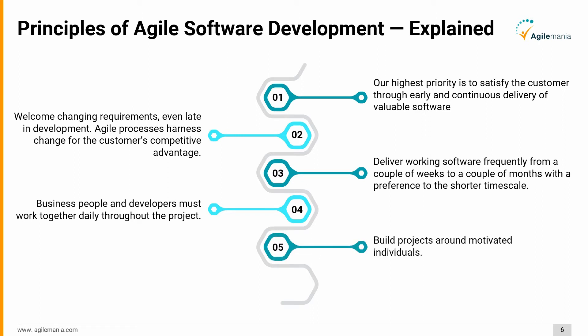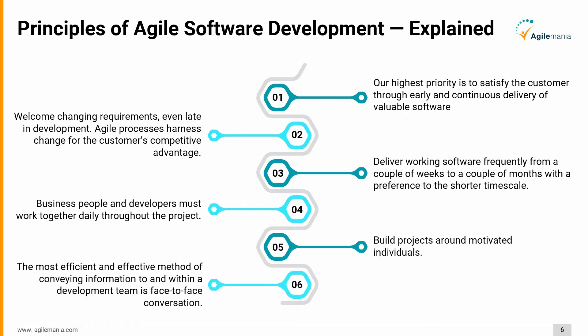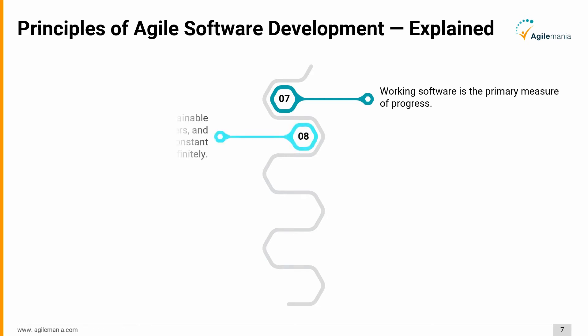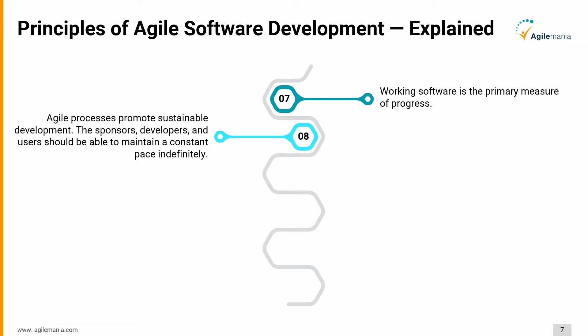The fifth principle: build projects around motivated individuals. The sixth principle: the most efficient and effective method of conveying information to and within a development team is face-to-face conversation. The seventh principle: working software is the primary measure of progress. The eighth principle: agile processes promote sustainable development — the sponsors, developers, and users should be able to maintain a constant pace indefinitely.